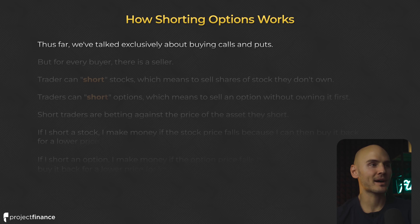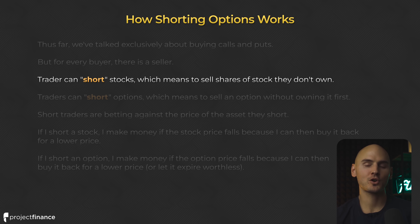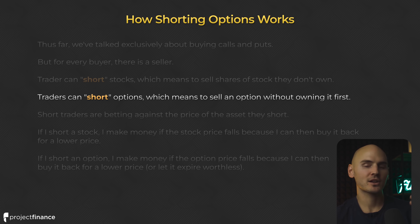You will see these terms very frequently when talking to options traders or reading options trading content. Thus far, we've talked exclusively about buying calls and buying puts, but for every buyer there is a seller. Traders can short stocks — selling shares they don't own with the goal of buying them back at a lower price. Traders can also short options, which means they are selling an option without owning it first. Short traders are betting against the price increase of the asset they are shorting. If I short a stock, I make money if the stock price falls because I can later close the position by buying back the shares at a lower price — selling high and buying low. Similarly, if I short an option, I make money if the option price falls.